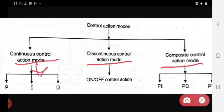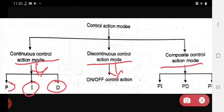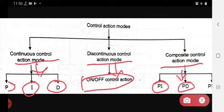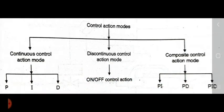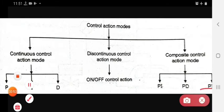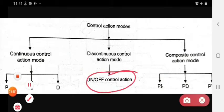Continuous control action mode has three types: proportional, integral, and derivative control. Discontinuous control action mode has only one type, which is the on-off control action. Composite action mode has three types: proportional-integral, proportional-derivative, and proportional-integral-derivative. In today's lecture, we see only the on-off control action.